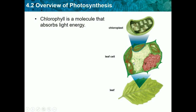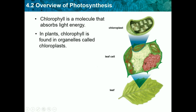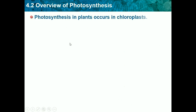Chloroplasts are in the leaf cell, and the leaf cell is in the leaf — that's also why it's green. In plants, chlorophyll is found in organelles called chloroplasts.